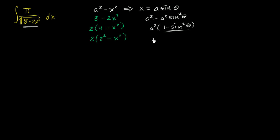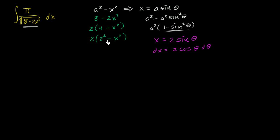So let's make the substitution that x is going to be equal to 2 sine theta, and dx is going to be equal to 2 cosine theta dθ. So what's this part under the expression going to be? We already started simplifying it: it's going to become 2 times 2 squared minus x squared, where x squared is 2 squared sine squared theta.